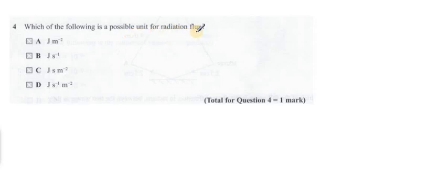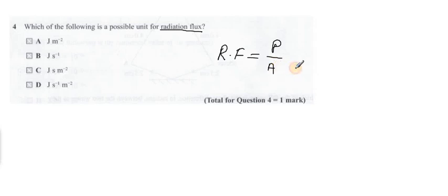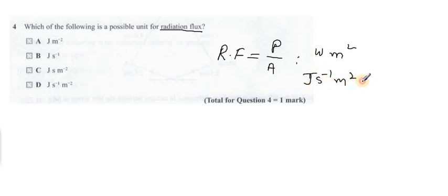Next: which of the following is a possible unit of radiation flux? Radiation flux, abbreviated RF, is power per unit area. The unit of power is watts and area is meter squared, giving units of joules per second per meter squared, i.e., J s⁻¹ m⁻². So the option is D.